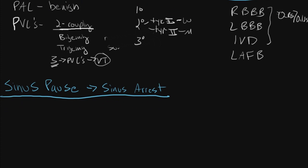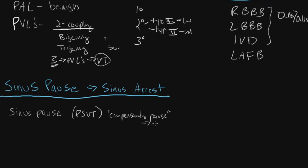Next, I want to briefly discuss the findings of sinus pause and sinus arrest. Sinus pause commonly happens after an arrhythmia such as paroxysmal supraventricular tachycardia. A PSVT usually has a period where the pacing goes into overdrive, and immediately after it resolves — because it's paroxysmal — you return to a sinus rhythm. However, after that period of PSVT, you often have a compensatory pause, also known as your sinus pause. It's during this period of pause that patients will commonly have syncopal episodes. Most commonly syncope is due to PSVT, and it's not the PSVT arrhythmia itself but the sinus pause after you return to sinus rhythm. This is also known as a post-conversion pause.